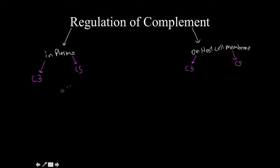C3, and then C5. So for C3, I'll do that in gold. In the plasma, we have things that are designed to turn it on, to increase the production, increase its cleavage rate, and then things that are going to turn it off, to decrease its cleavage rate.